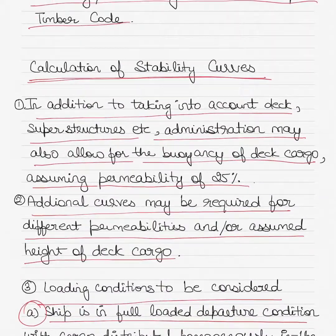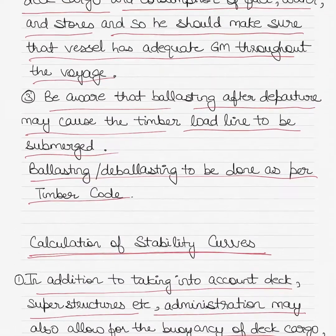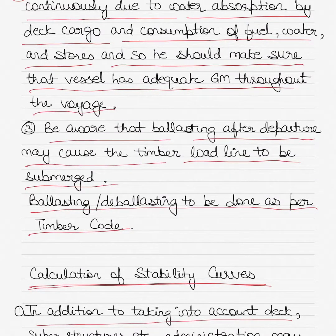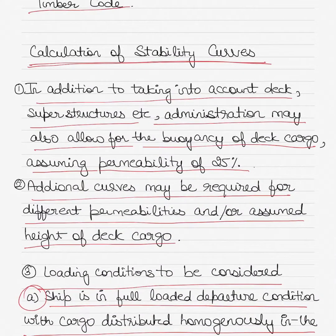The key thing to remember is that calculation of stability in a timber-carrying ship is always for the worst condition. The ship may face rain, shipping seas, sprays, or ice, all of which cause the timber to absorb water. Water absorption is where stability complications arise, and that is the worst condition the master must account for when calculating stability criteria — especially GM. The master must ensure adequate GM that remains positive even after deck cargo absorbs water or stores are consumed.